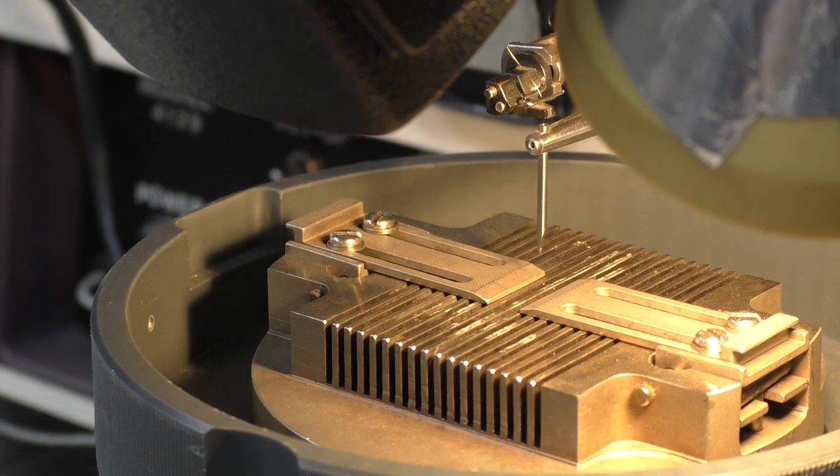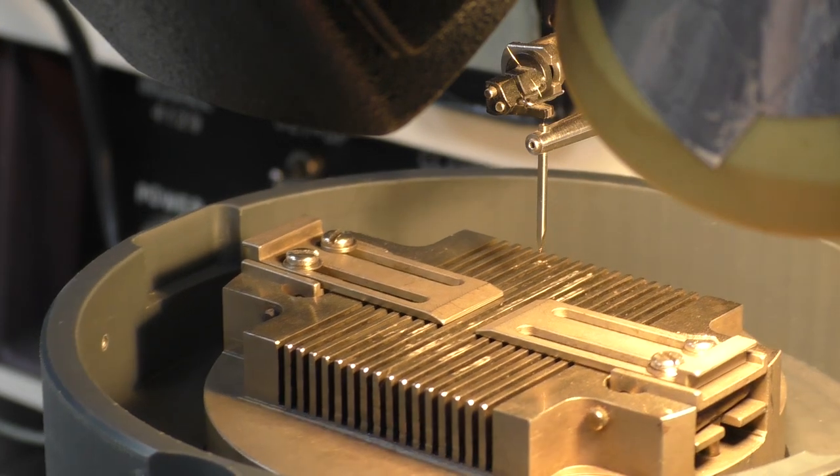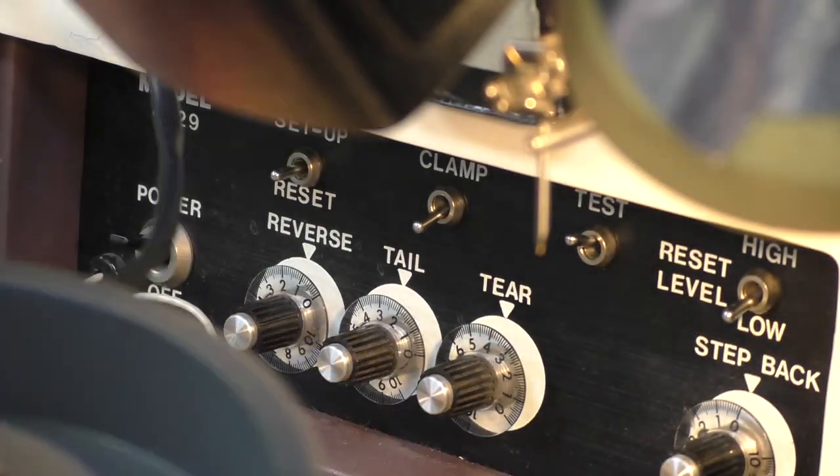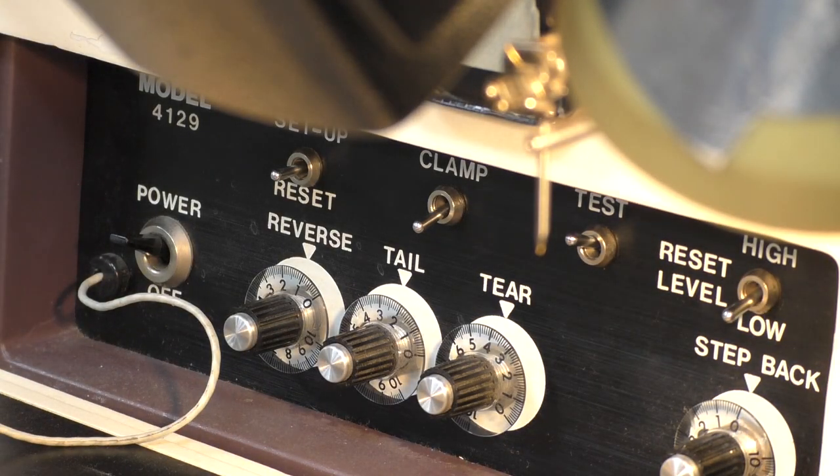Now it's time to actually do this. So before we bond, the wire has to be properly threaded through the wedge tool and you'll see why in a second. I'll remove the heated work holder so I don't burn my hand on it while doing this step.